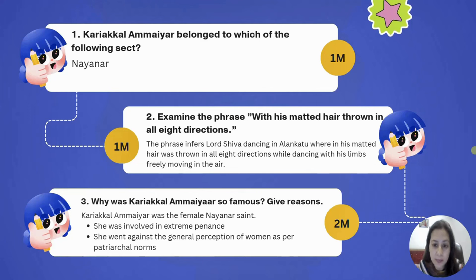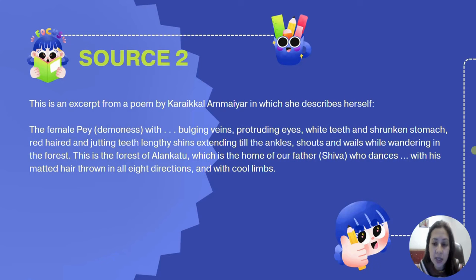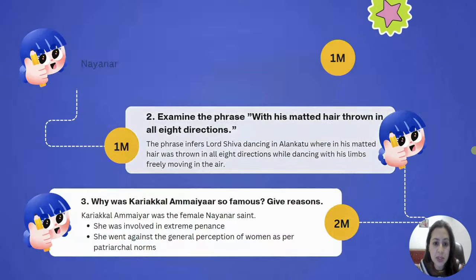This requires your skill to comprehend and write the answer in your own words. Why was Karayikal Amayar so famous? She openly challenged the norms of society, especially patriarchal norms. She was a female Nainar saint involved in extreme penance. She went against the general perception of women as dictated by patriarchal norms, giving a different and powerful image of women.